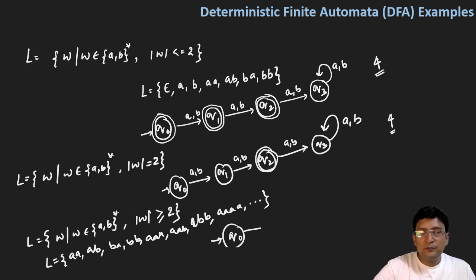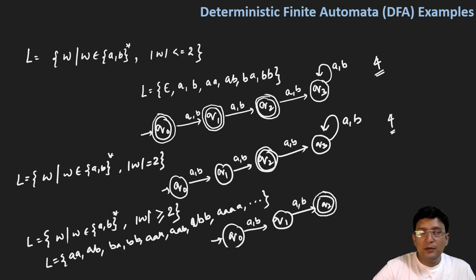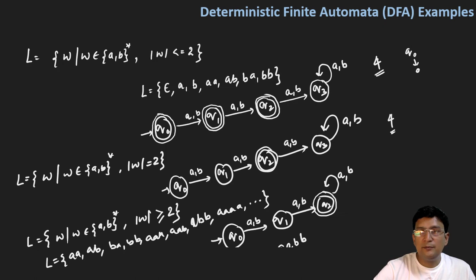So q0 on A and B you move to state q1, and then on transition with A and B you come to state q2. Since the two-length string is going to be accepted, q2 should be the final state. If we are getting more symbols at state q2 — A or B — you should stay at the final state. For example, for the string AABB: from q0 move to q1 on A, with A move to q2, then with B remain at q2. Since q2 is the final state, the string gets accepted.